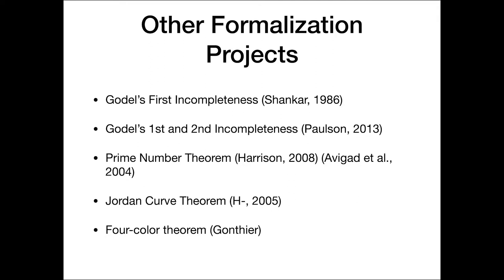So some other major formalization projects. Over time, Gödel's first incompleteness theorem was done very early in the Boyer-Moore system, 1986, by Shankar. The second incompleteness was added by Paulson in the Isabelle system in 2013. There have been two different formal proofs of the prime number theorem, the statement that if you count the number of primes up to a given number n, that's asymptotic to n divided by the natural log of n. And then in the literature there are two, there's a big division among the proofs, there's the analytic proof and then elementary proof of Erdős and Selberg, and both of them have been formalized in different proof assistants.